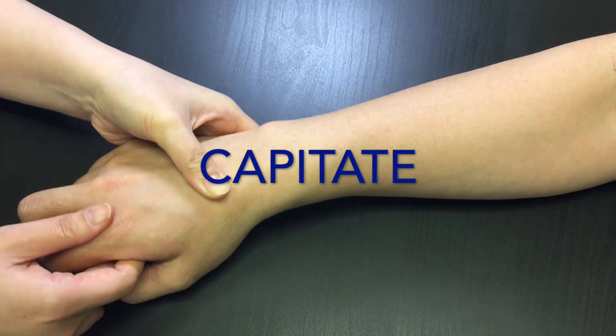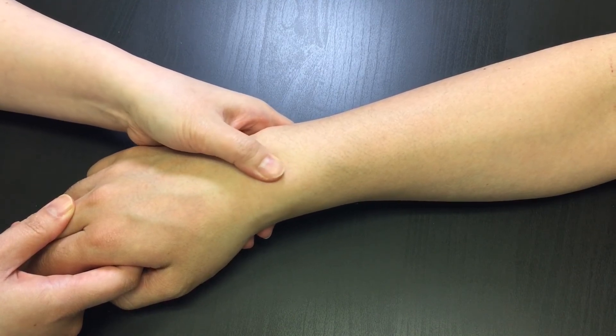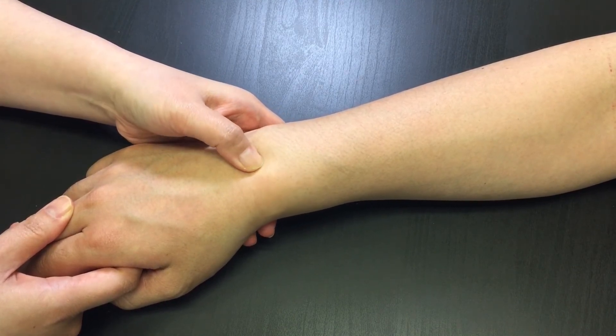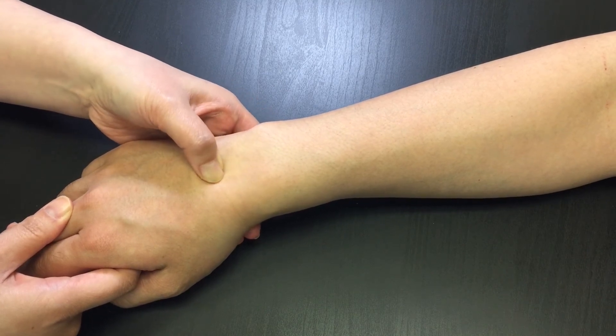Capitate is distal to the lunate and proximal to the base of the third metacarpal bone. Locate the lister's tubercle and move distally into ulnar side a bit to locate the lunate. Move a bit distally then you are on the capitate. Flex and extend wrist to feel the capitate rolling under your finger.